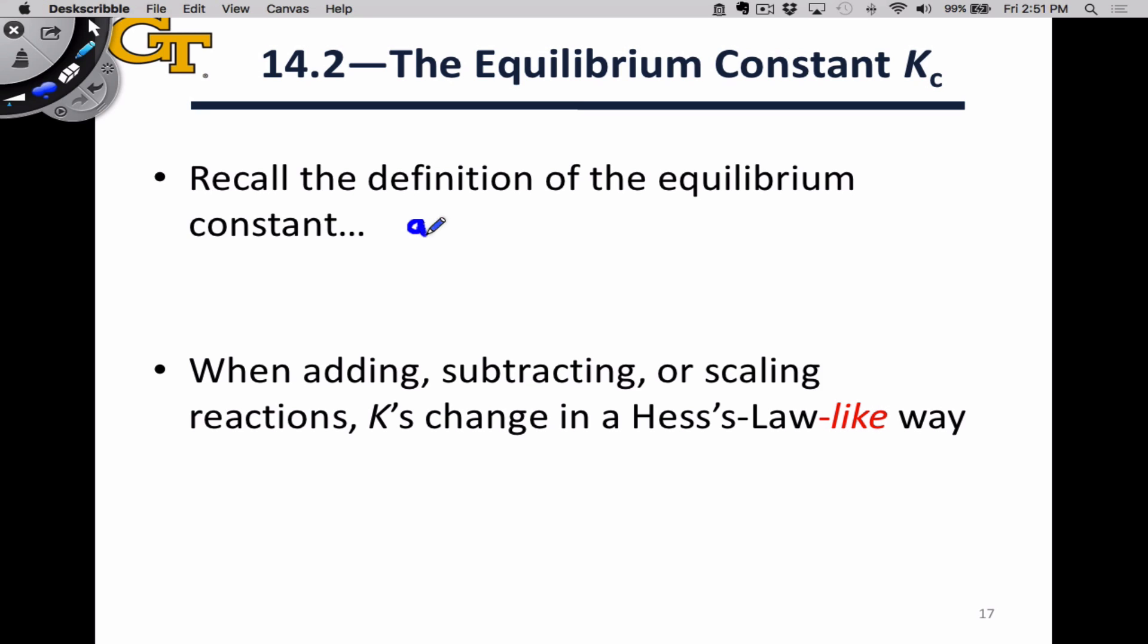So to begin, let's recall the definition of the equilibrium constant for a general process. A molecules of A plus B molecules of B goes reversibly to C molecules of C and D molecules of D.